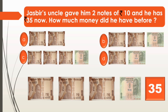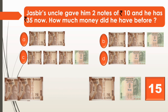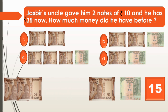We know his uncle gave him 2 notes of rupees 10, so we will keep aside 2 notes of rupees 10. And when we take away those 2 notes of rupees 10, Jasbir has 15 rupees on the right side — one 10 rupee note and one note of 5 rupees.